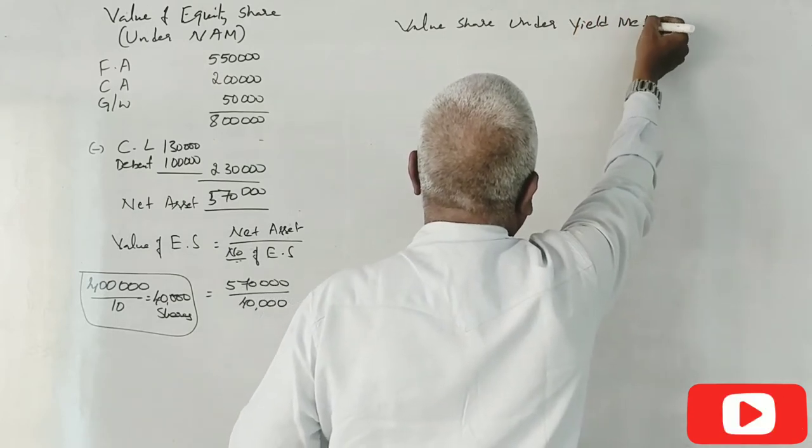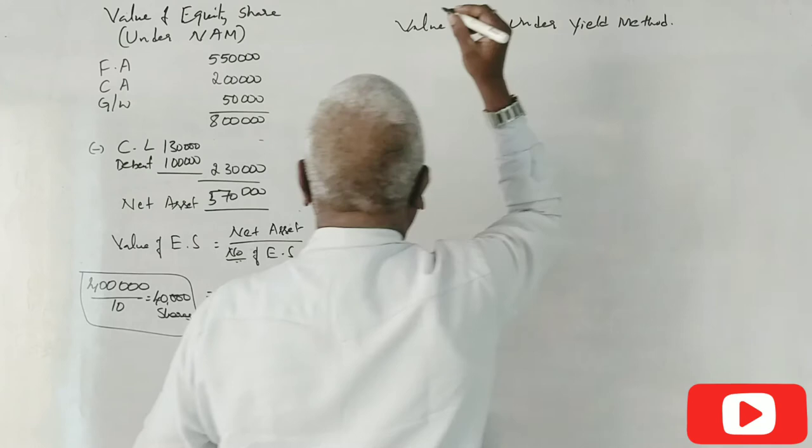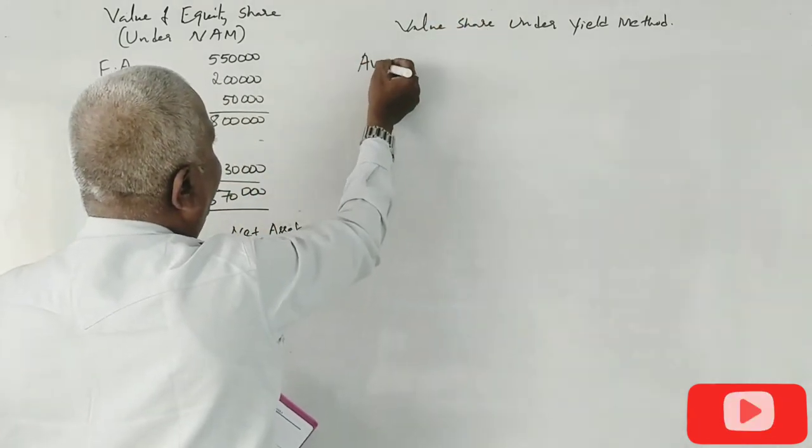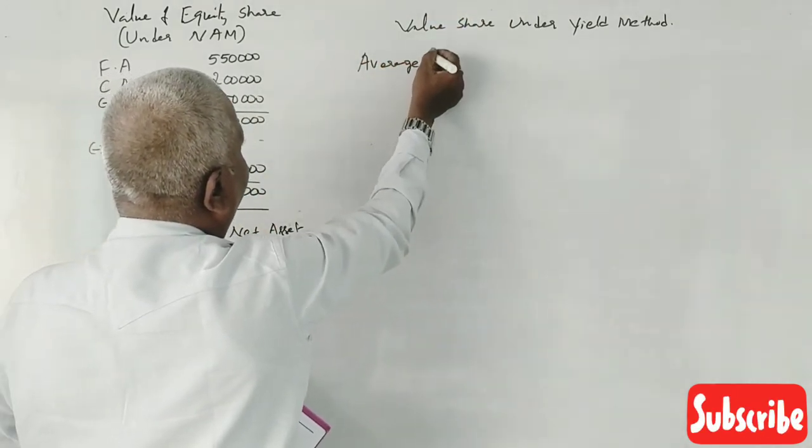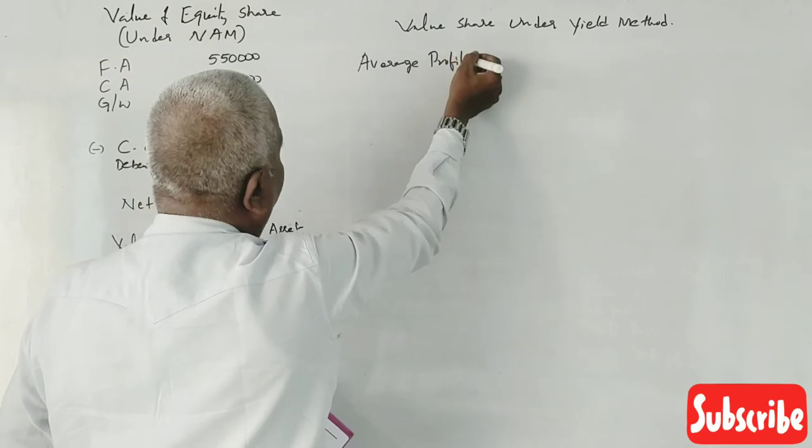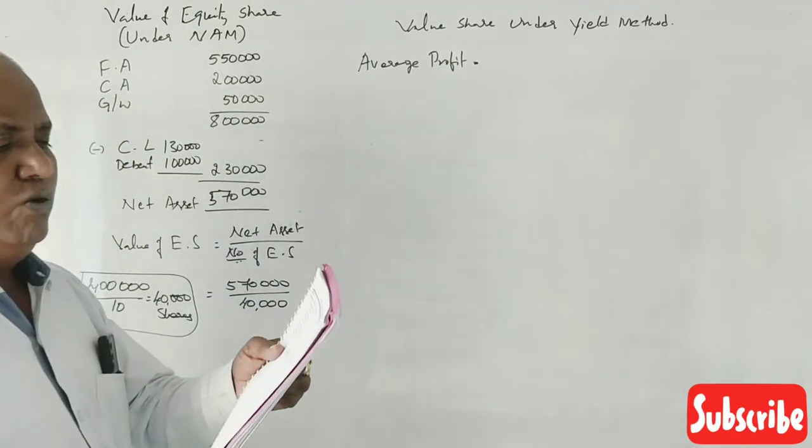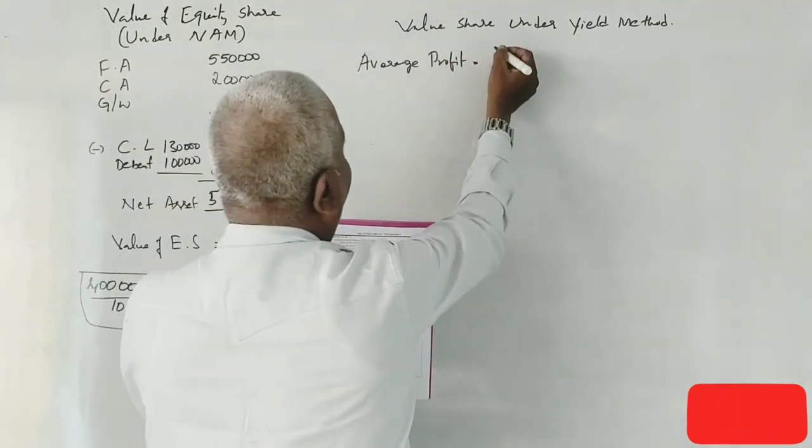Next, value of share under yield method. First, average profit. Three years' profit: 51,600.